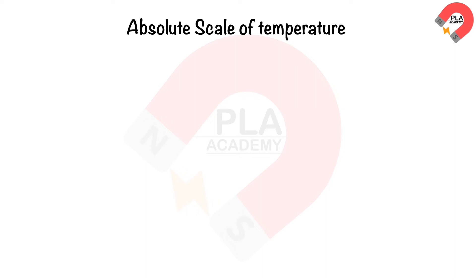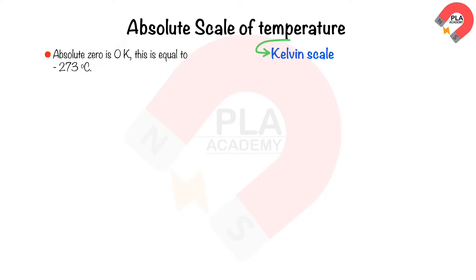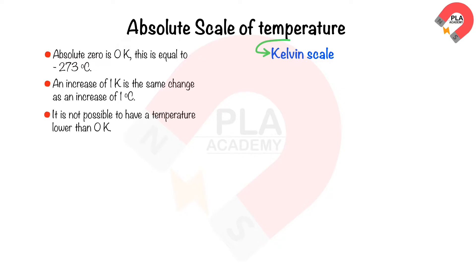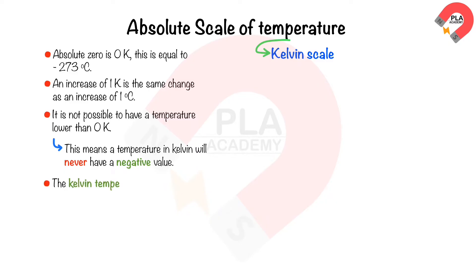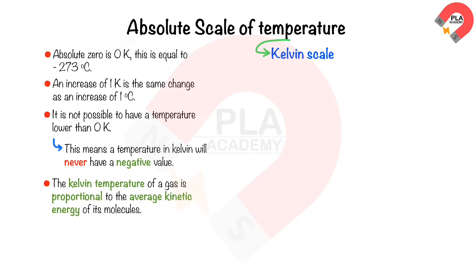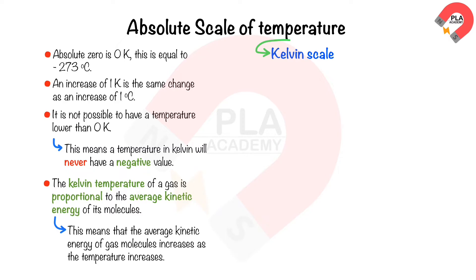The absolute temperature, or Kelvin temperature, is measured on the Kelvin scale. Absolute zero is 0 Kelvin, which is equal to minus 273 degrees Celsius. An increase of 1 Kelvin is the same change as an increase of 1 degree Celsius. It is not possible to have a temperature lower than 0 Kelvin, meaning a temperature in Kelvin will never have a negative value. The Kelvin temperature of a gas is proportional to the average kinetic energy of its molecules, meaning the average kinetic energy of gas molecules increases as the temperature increases.